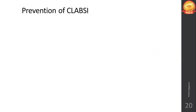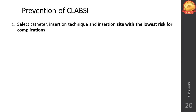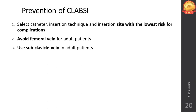Select the catheter insertion technique and insertion site with the lowest risk of complication. As much as possible, avoid the femoral vein in adult patients — avoid the groin area. The preferred site is the subclavian vein in the clavicle region, which is more convenient.